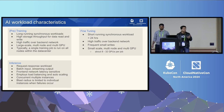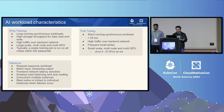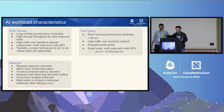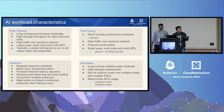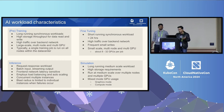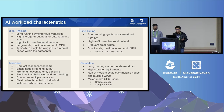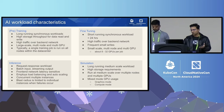Inference is when you run your models in production. It's a request-response workload with batch input and streaming output, very sensitive to front-end network latencies, and employs load balancing and auto-scaling. Many concurrent instances of the model can be deployed in parallel, and the blast radius for failures is limited to individual instances. Additionally, simulation is another workload on AI clusters — a long-running, medium-scale workload with high storage requirements where some GPUs run in graphics mode and some in compute mode.